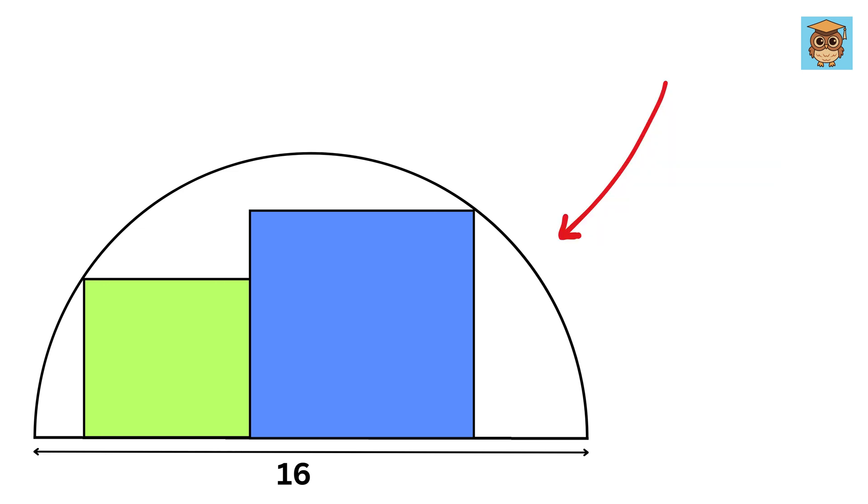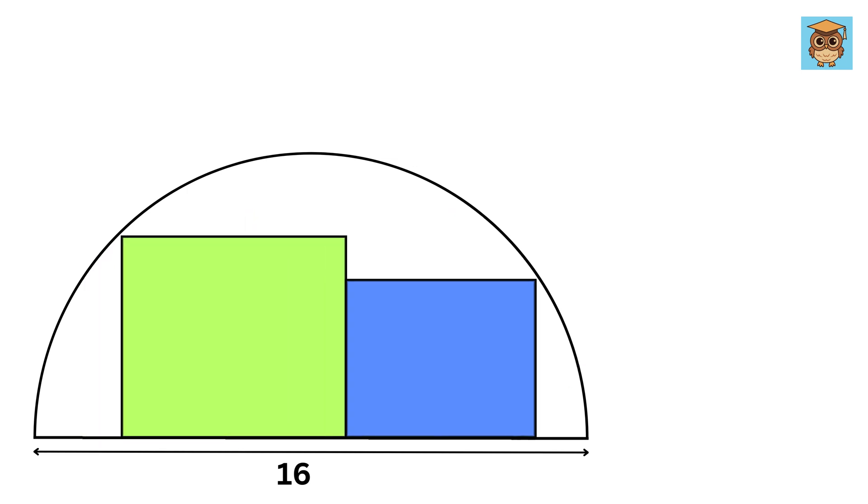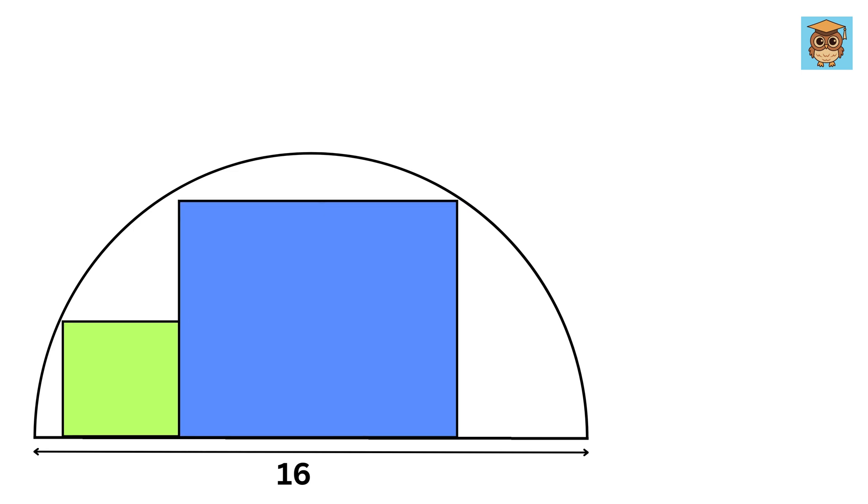We have a semicircle whose radius is 8 units, and then we have these two squares. The location of these squares is nowhere given. It can be anywhere.